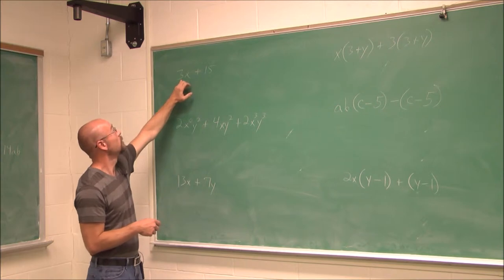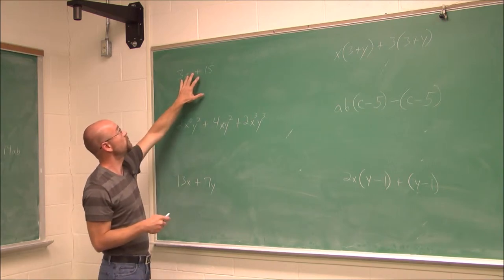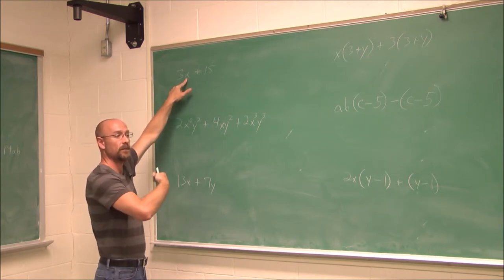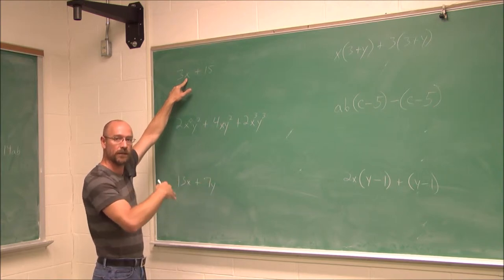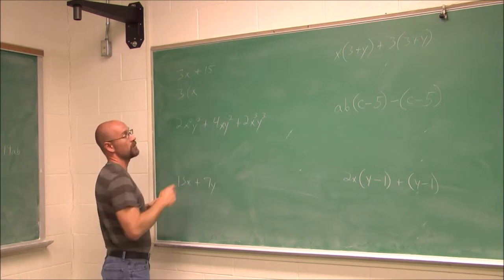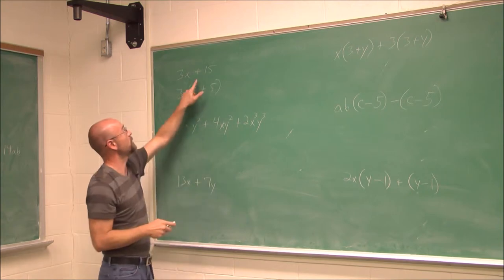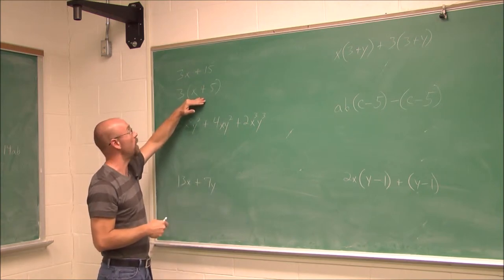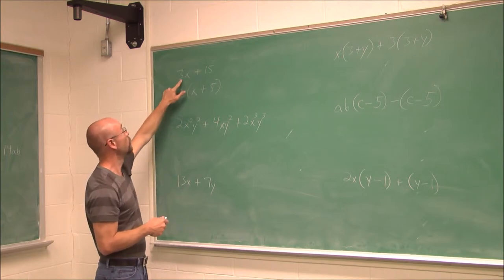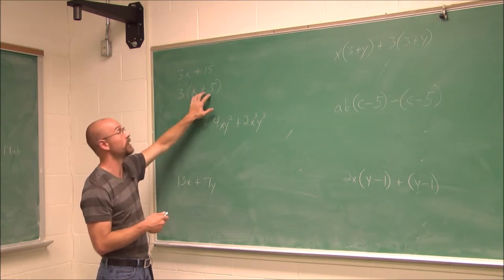What do 3x and 15 have in common? 3 goes into both of these — that's a common factor. If I'm going to pull a 3 out, this is called the process of factoring, and essentially it's division, since I'm undoing distributive property. If I divide a 3 out of the first term it leaves me with x, and dividing a 3 out of the second term leaves me with 5. So we write it as 3 times the quantity x plus 5. To check our work, we can distribute back through to confirm we get what we started with.